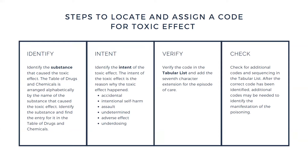Undetermined intent: an undetermined intent is used only when the intention of the toxic effect cannot be determined to be any of the other types — accidental, intentional, assault, adverse effect, or underdosing. For example, if a patient is found unconscious due to a poisoning caused by a combination of drugs and the intent cannot be determined, then the intent would be undetermined. Use this code option only when the documentation explicitly states that the intent cannot be determined.